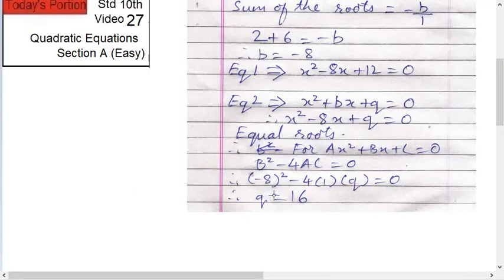Therefore, just solve this. You'll get q equals to 16. 64 minus 4q equals to 0. 64 on the other side, you get 64. Then cancel it, you get 4q equals to 64, q equals to 16. That's the value of q required.